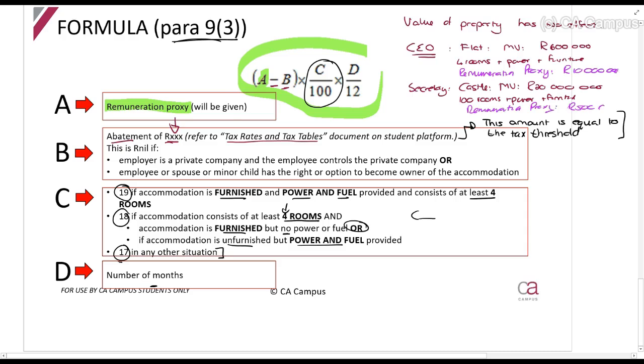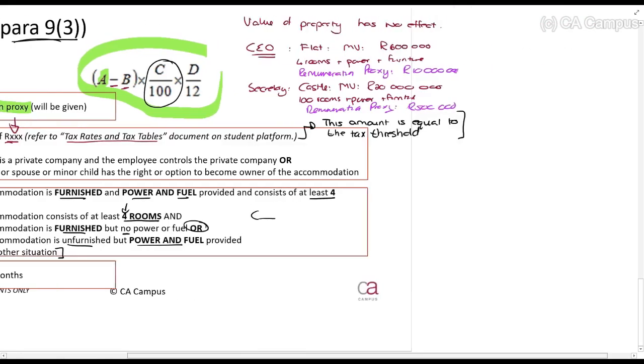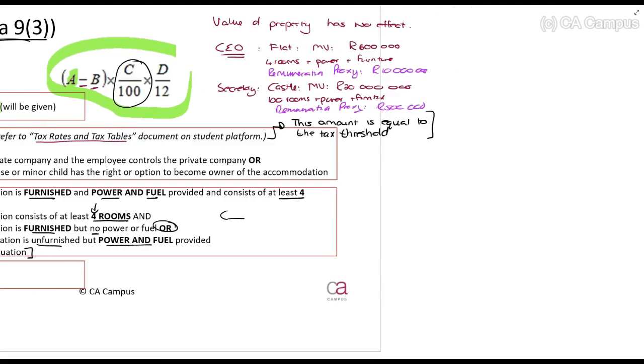So the CEO will be R10 million - we're doing this formula, A minus B. I'm going to say, assume B equals - this is not the correct amount, just assume R100,000 - times 19/100 for the entire year. So the value is R1.881 million.